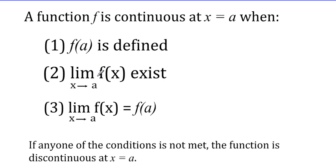Checking whether the limit exists means you'll likely have to take the one-sided limits for most questions. The last condition is that number one and number two are equal — so f of a, whatever you get for that value, and whatever you get for the limit as x goes to a, have to be equal. If any of these conditions fail, the function is discontinuous.